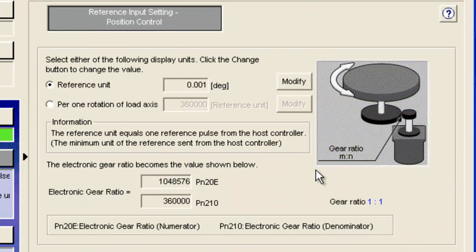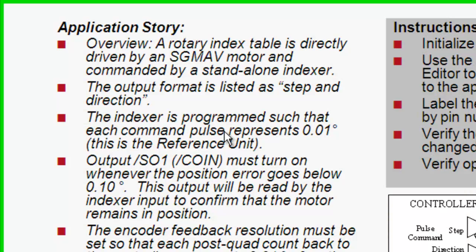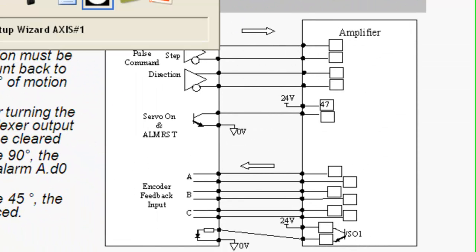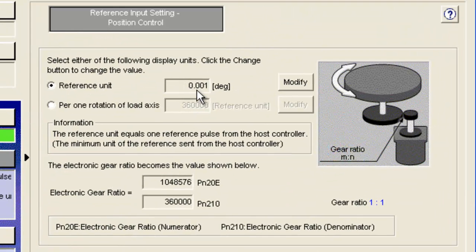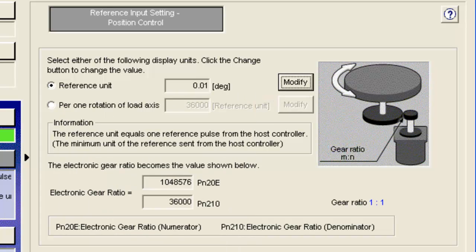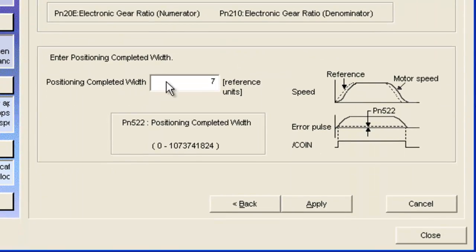Next here's the reference unit, and this refers to the distance that the machine should move when one pulse comes from the controller. We call that the reference unit, and I want to set that to 0.01 degrees. So see here that's been set to 0.001 degrees by default. I'm going to modify and just knock off a zero here.